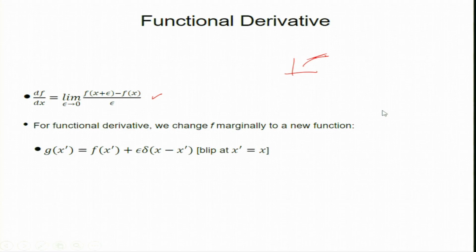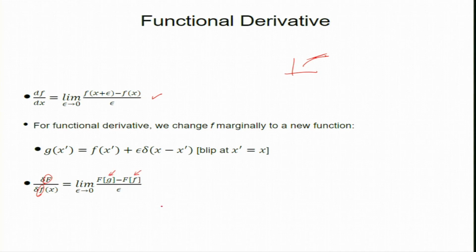For a functional derivative, the idea is this: the functional F takes a function f as its argument. I take the difference between two functions. Capital F takes a function as its argument — g is one argument and small f is another — where g is a slightly disturbed version of f, altered by a small amount. That deviation is ε δ(x − x′). So g and f are very close, but at x′ there is a delta function multiplied by the small parameter ε.